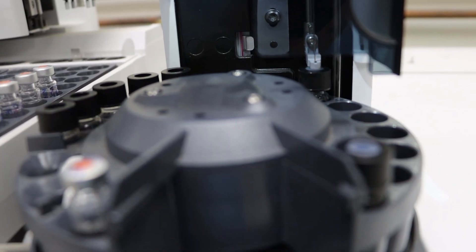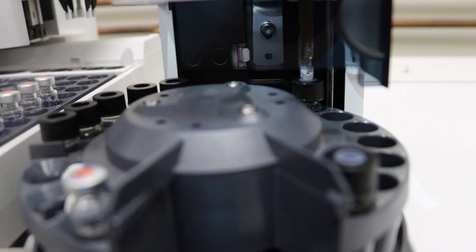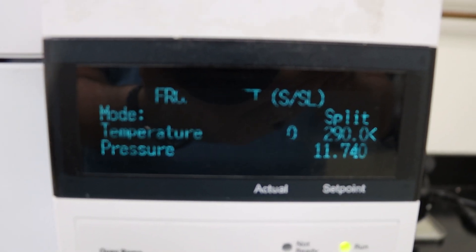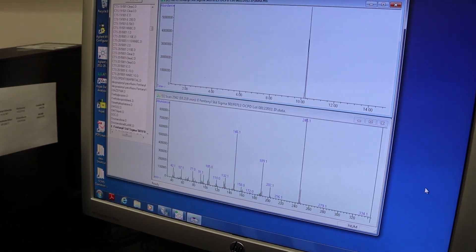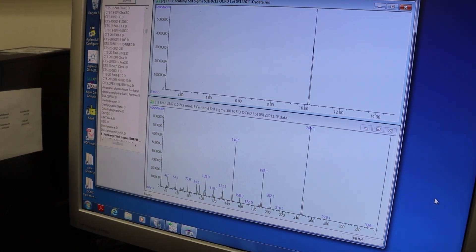And then it goes into the mass spec where it's bombarded with electrons and fragmented into little pieces. These are called a total ion chromatograph when they're graphed, and this is what we can use to identify it.